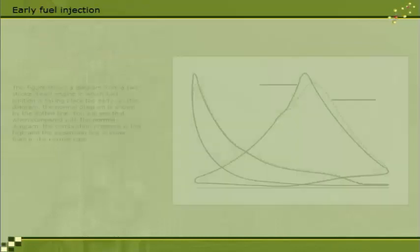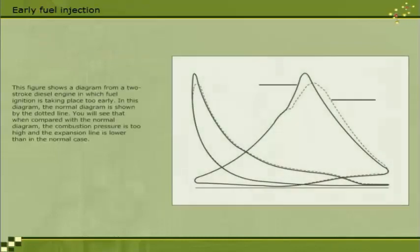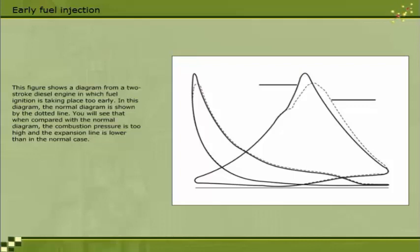This figure shows a diagram from a two-stroke diesel engine in which fuel ignition is taking place too early. In this diagram, the normal diagram is shown by the dotted line.